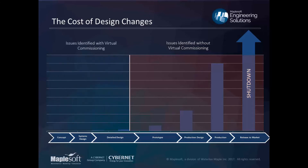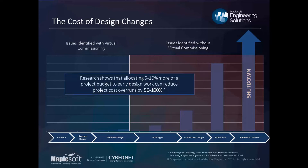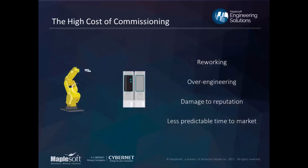The key idea behind virtual commissioning is that it allows you to start identifying these problems earlier, and of course earlier means it's less expensive to make changes when you find those problems. These techniques have been used in aerospace and automotive for a long time. Research actually shows that doing more of this work upfront can save you dramatically in the long run.